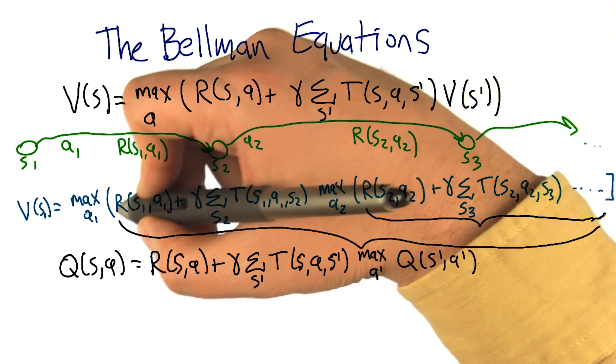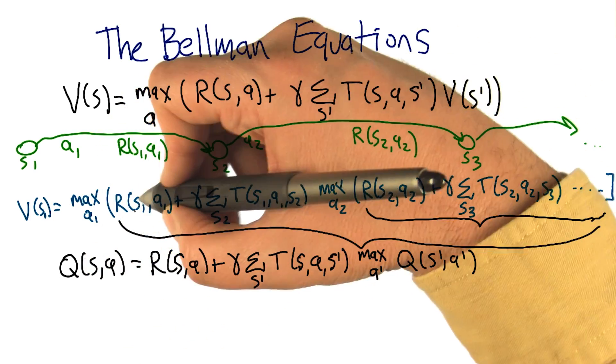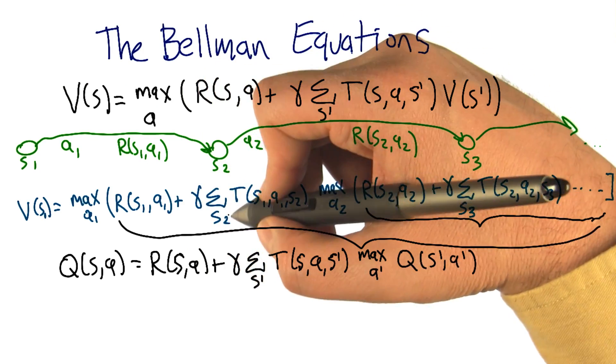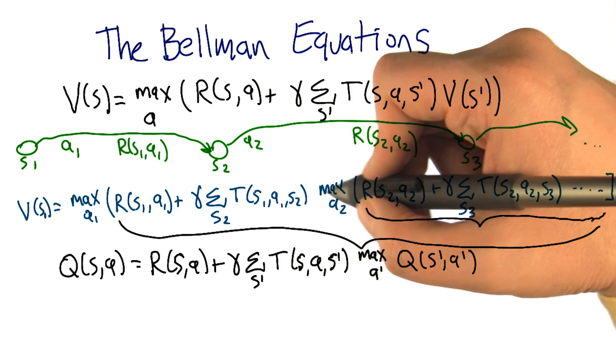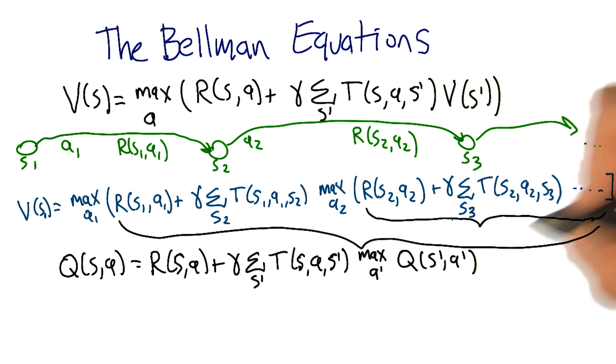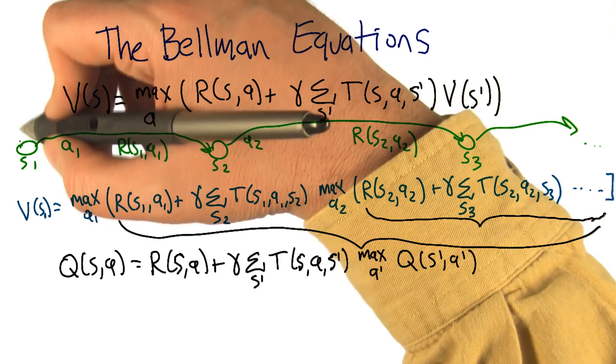So the idea is that we can actually just give a name to this big outer brace. We'll call it Q(S,A), and we'll say that it's equal to R(S,A) plus the discount factor times the sum over next possible states, the probability of getting there, times max A prime of, and then there's that repeating structure again. So we can just plug in Q of S prime A prime for that. This gives us another Bellman equation.